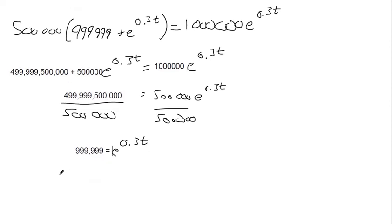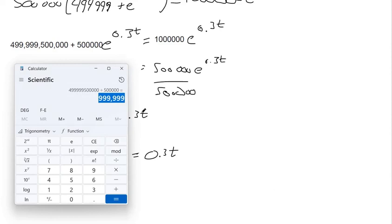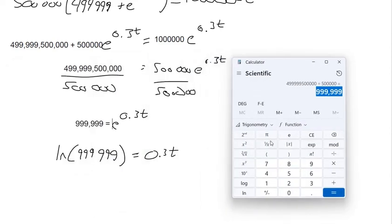So to get t by itself, we need a natural log of both sides. Natural log of e to the 0.3t is 0.3t. And so to finish getting t by itself, we divide 0.3 from both sides. So take natural log of this number, divide by 0.3, so there's our time, 46.05169 years.